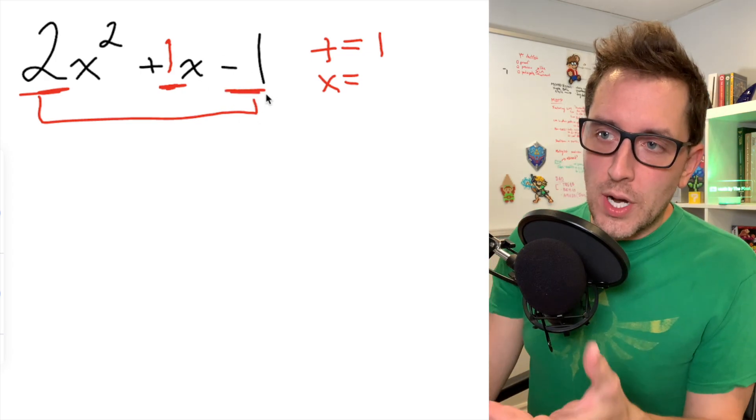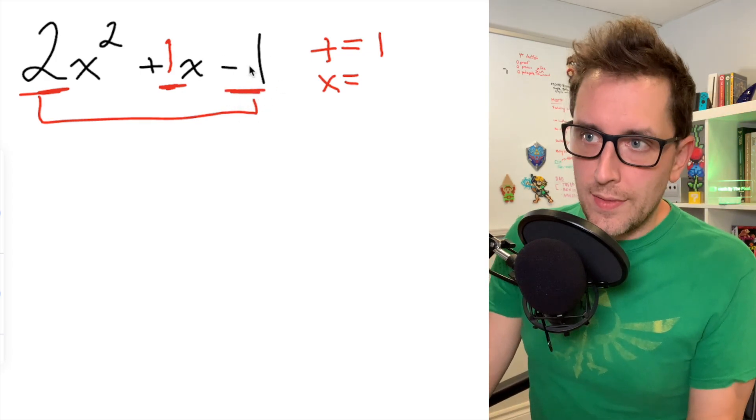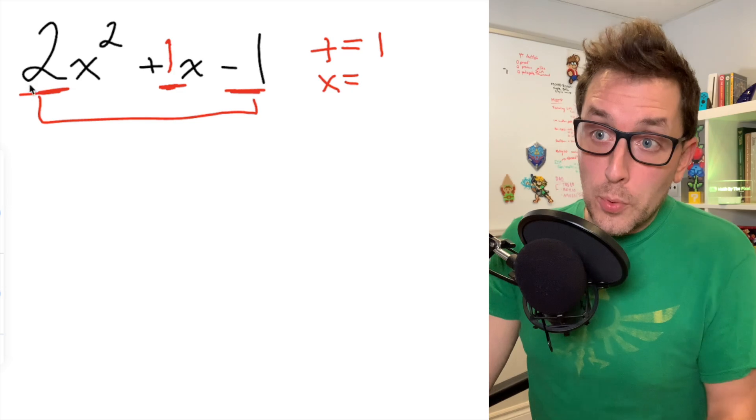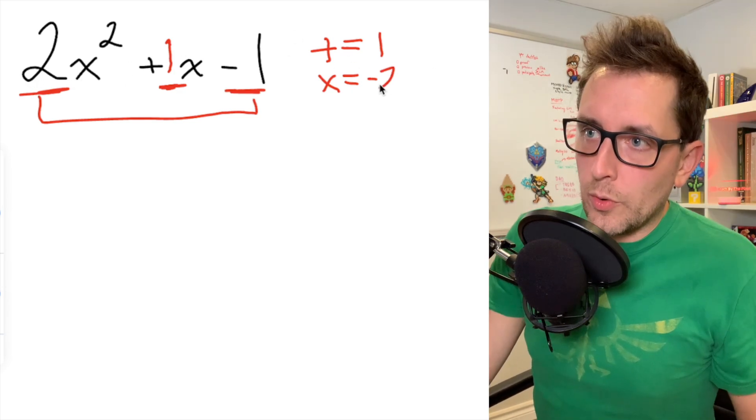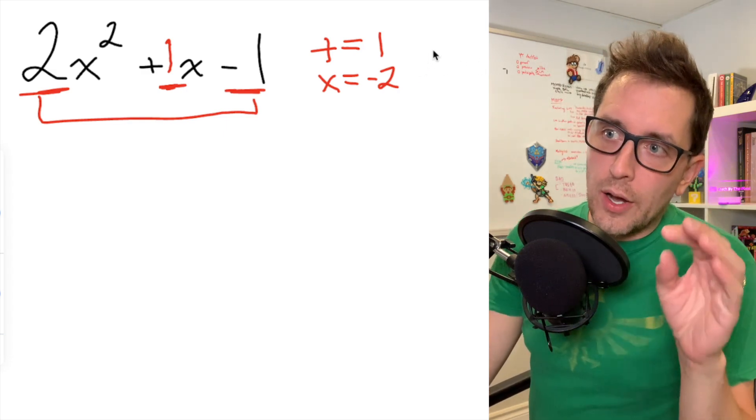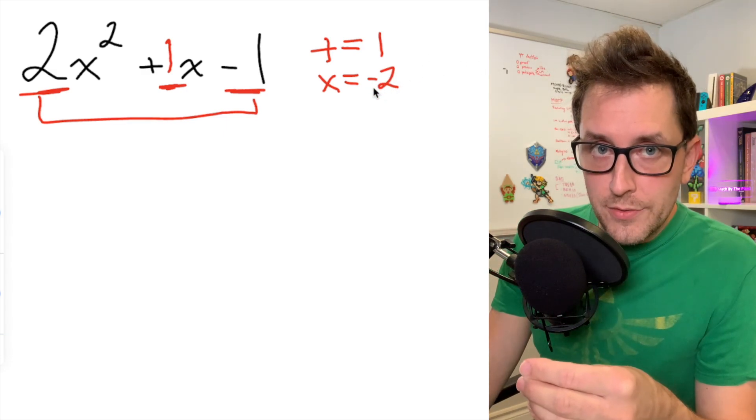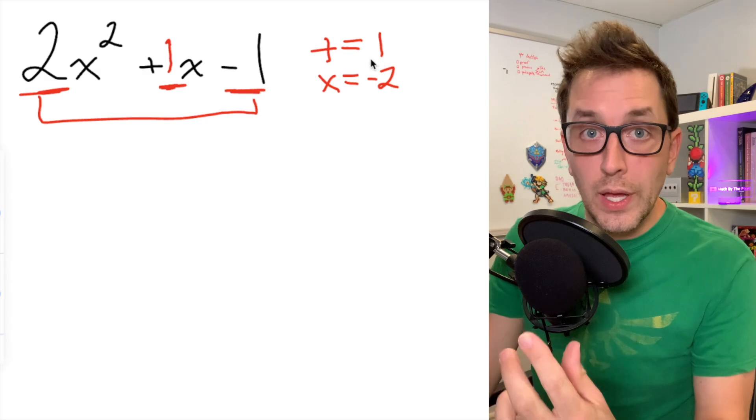But the two numbers we pick also have to multiply to get us the product of a and c. c is the term in the trinomial that doesn't have an x. In this case it's -1. The product of a and c is going to be -2 in this case, 2 times -1. So I'm looking for two numbers that are going to multiply to give me -2 while also adding to get 1.